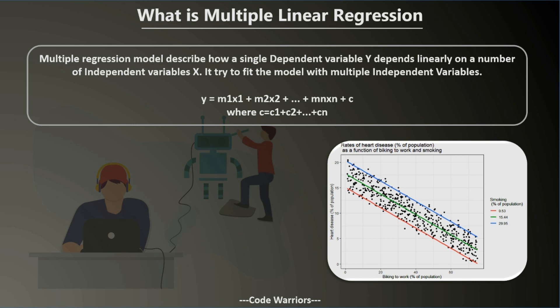Similar to the slope equation, for multiple linear regression these are all combined. So the value of y becomes m1*x1 + m2*x2 + ... + mn*xn, and for the constants c1 + c2 + ... + cn. When you see multiple constants adding to each other in mathematical graphs, we combine them into a single constant c. So we replace the addition of all the c values with a single constant c. That was the second step — what is multiple linear regression.